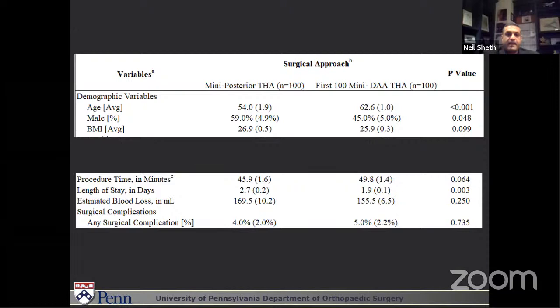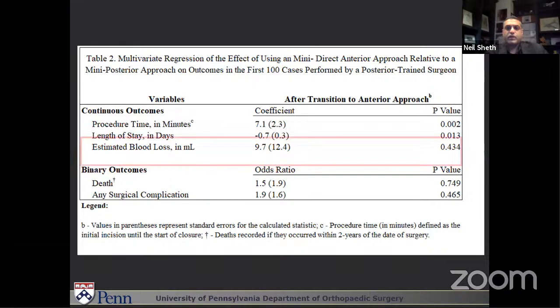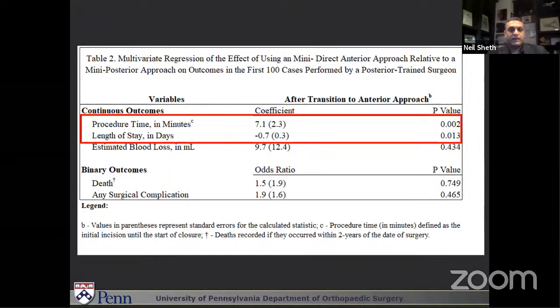What we noticed is that patients were mostly the same in both groups, except they were a little bit older in the direct anterior group. The important finding was that the complication rate was really no different for any type of complication following surgery, whether intraoperative or perioperative. When we looked at surgical time, we were about seven minutes longer on average for our anterior hips — statistically significant, but I don't think clinically significant. Length of stay was almost 0.7 of a day less for the anterior approach compared to the posterior approach. Looking at multivariate regression analysis, again our complication rate was no different between the two procedures.